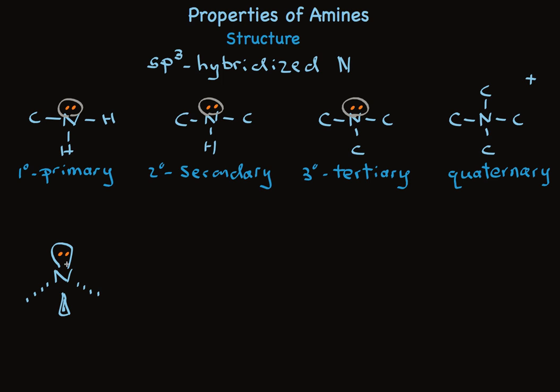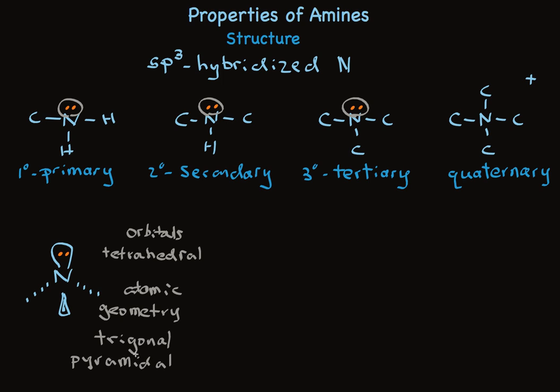Because of that unshared pair together with three atoms attached, the geometry of the orbitals around nitrogen is tetrahedral. But if asked about the atomic geometry of amines, you would need to say trigonal pyramidal, because we can't see the electrons — they're not an atom. So if you look at the atoms arranged around nitrogen, it doesn't look like a tetrahedron. The tetrahedral arrangement of orbitals would suggest we could have a stereogenic center at nitrogen, and you can.